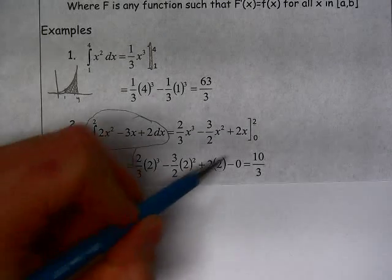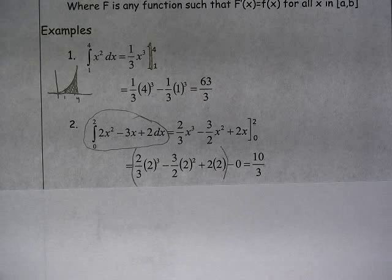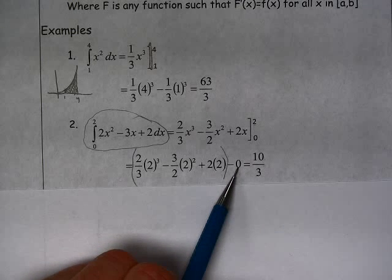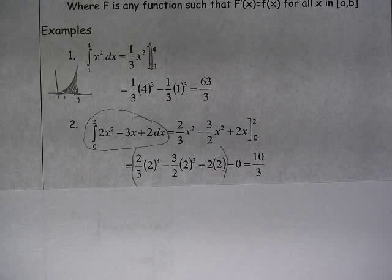So here is that antiderivative evaluated at x equals 2. When we evaluate it at 0, it's just all 0. Every term has a 0 in it, a 0 factor. When we simplify this, we get 10 thirds.